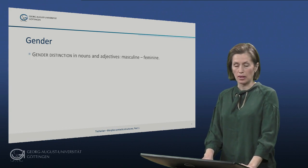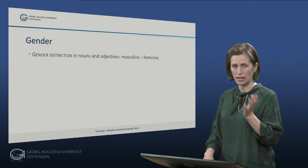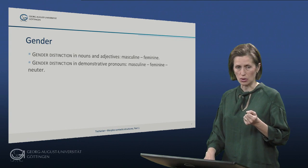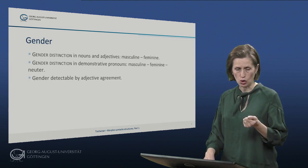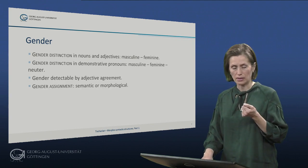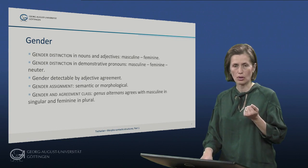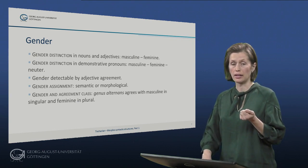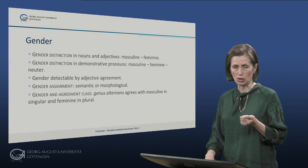Moving over to gender: there is a gender distinction in nouns as well as in adjectives. The basic system has masculine and feminine — two genders. In the demonstrative pronouns we have a three-gender distinction: masculine, feminine, and neuter. Gender is detectable basically by adjective agreement, in the case of inflected adjectives. Since a large group of adjectives are uninflected, the gender assignment is either semantic, for instance by sex, or morphological, for instance by stem finals. There is also a specific group called the genus alternans, which agrees with the masculine in singular and the feminine in plural, corresponding to the historical Indo-European neuters.